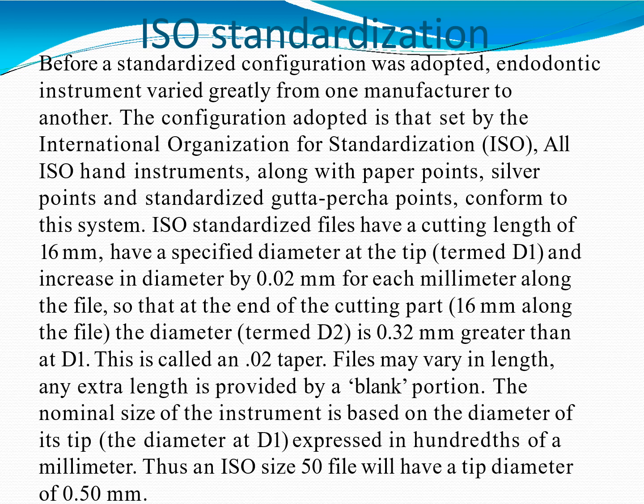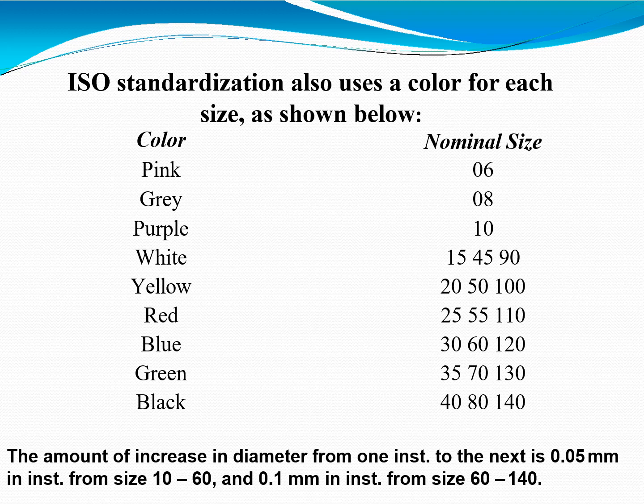ISO standardized files have a cutting length of 16 millimeters and a specified diameter at the tip, termed D1. There is an increase in diameter of 0.02 millimeters for each millimeter along the file, so that at the end of the cutting part — 16 millimeters along the file — the diameter, termed D2, is 0.32 millimeters greater than D1. This is called a 0.02 taper. Files may vary in length; any extra length is provided by a blank portion. The nominal size of the instrument is based on the diameter at D1, expressed in hundredths of a millimeter. Thus an ISO size 50 file will have a tip diameter of 0.50 mm.